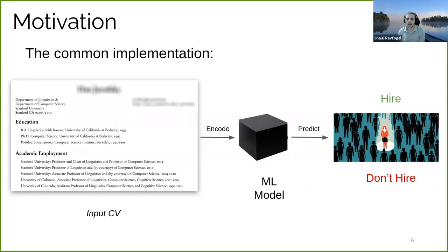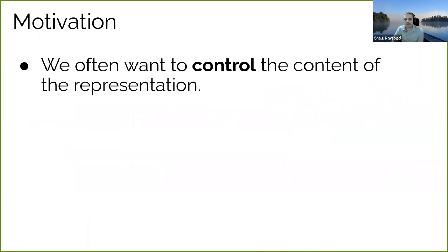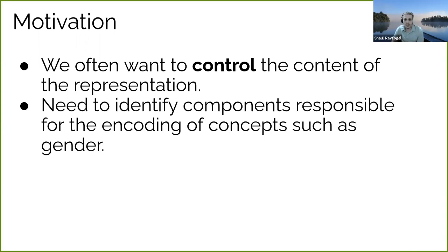These representations may encode relevant information — for example, information about the education of the candidate — but they may also encode information we would not want included, such as information about the gender of the candidate. We would not want the decision to rely on gender. More generally, we often want the ability to control the content of neural representations — to decide which information is present and which is not.